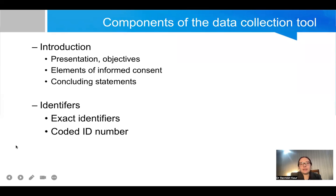When we are designing a data collection tool we need to focus on few areas. In the introduction of the questionnaire you give a brief outlook regarding the objectives of the study and you also give the elements of informed consent in this part. You can have identifiers like exact identifiers like the name, age, or the CR number of the subject. But if you want to maintain the anonymity of the subject you can use coded ID numbers also.